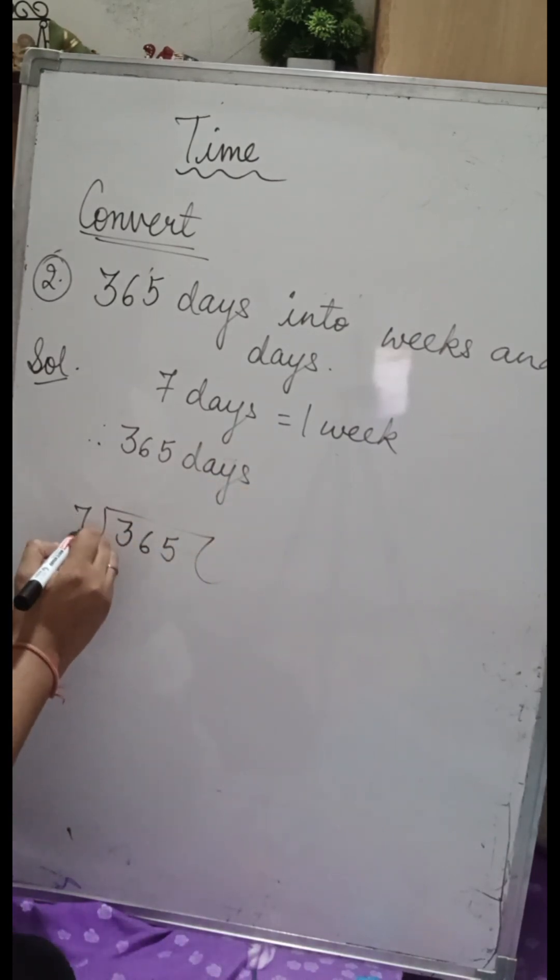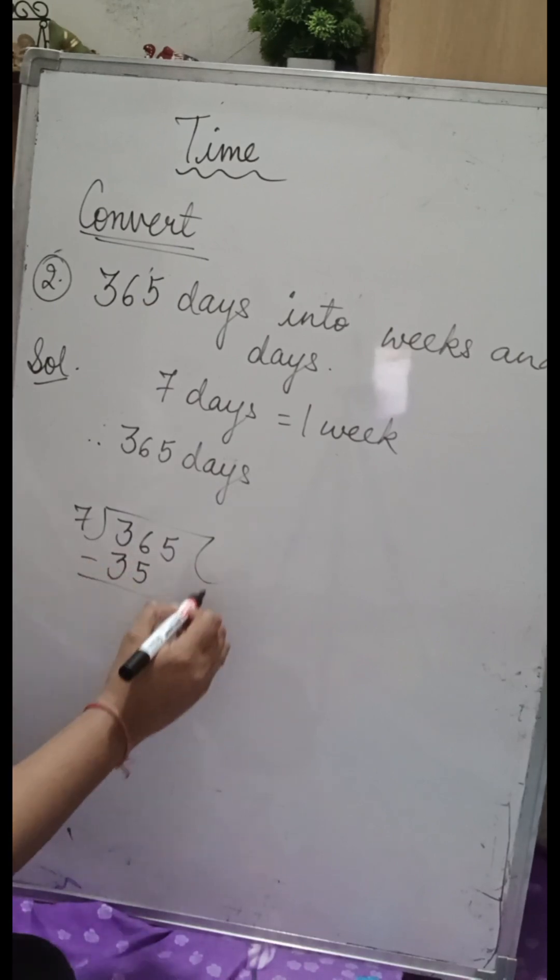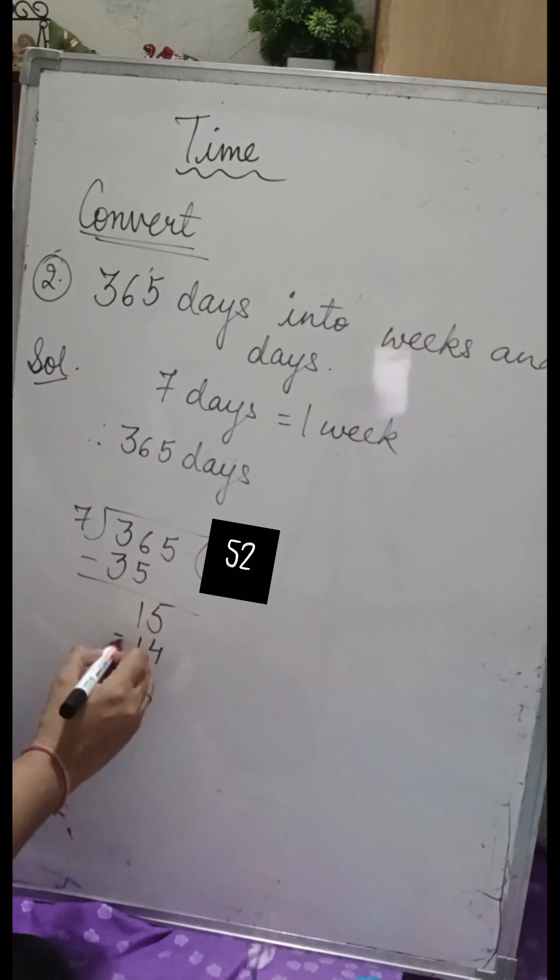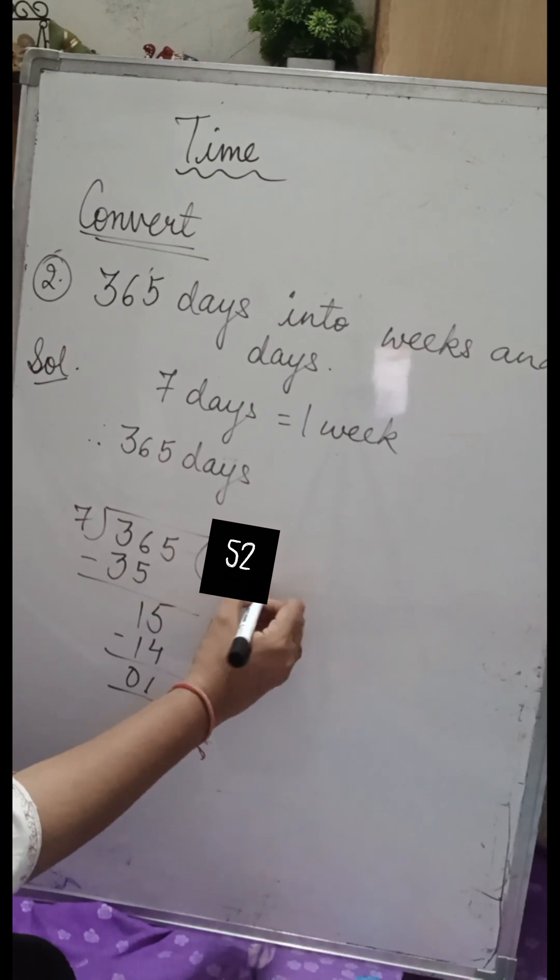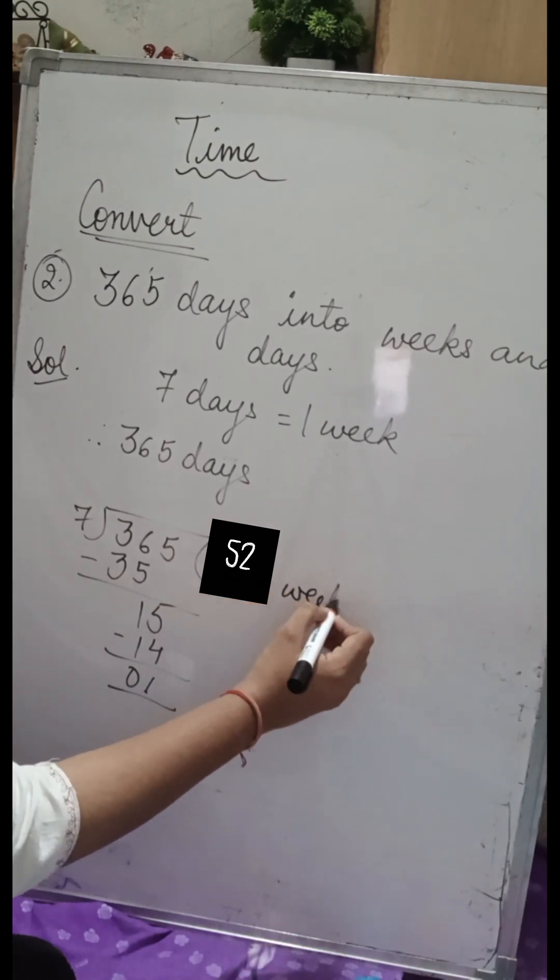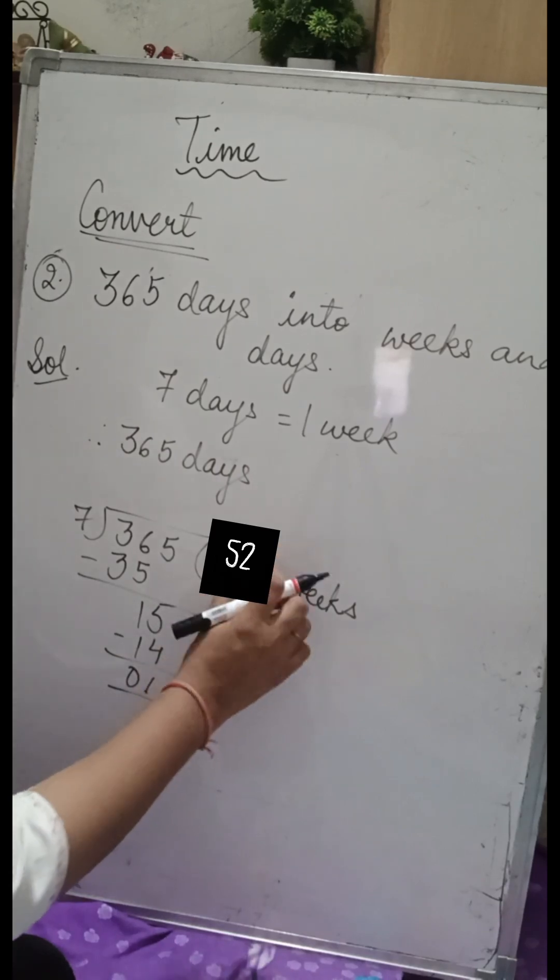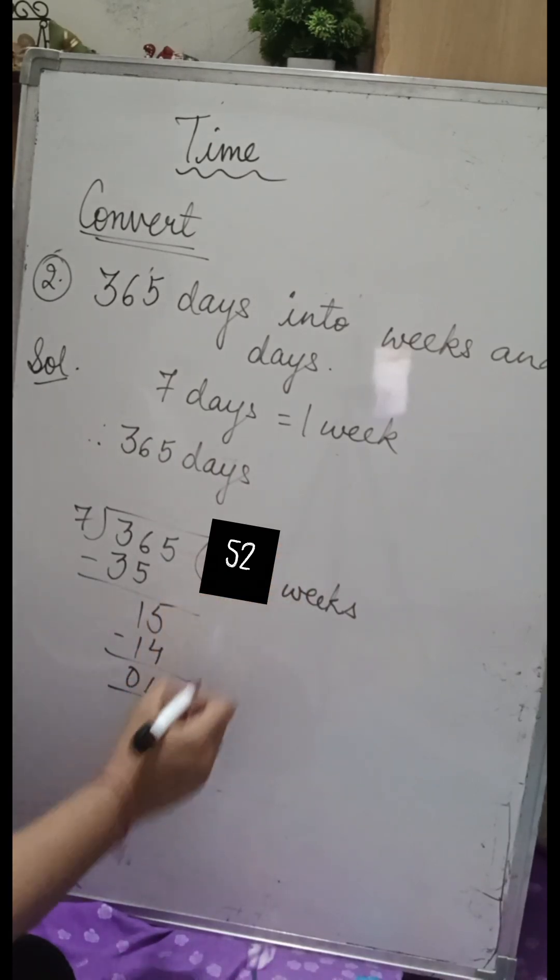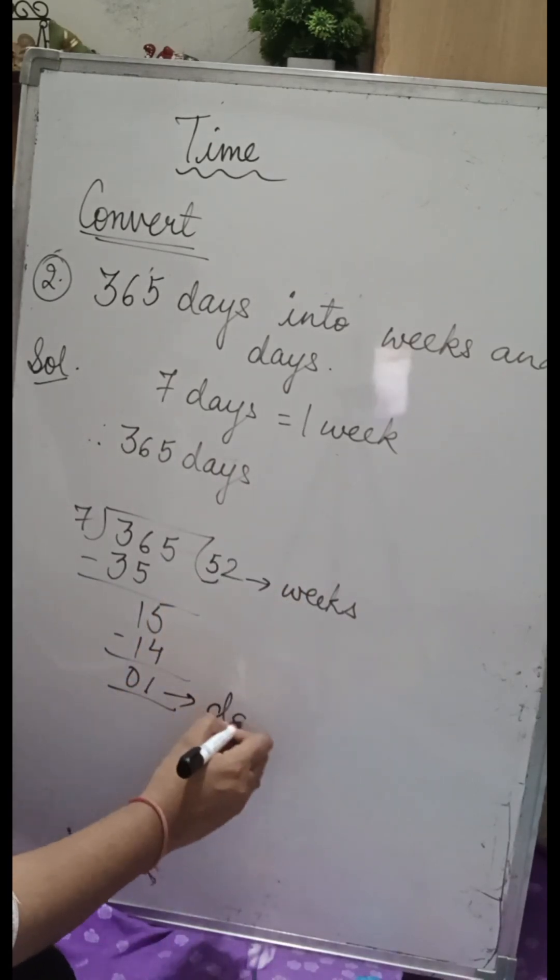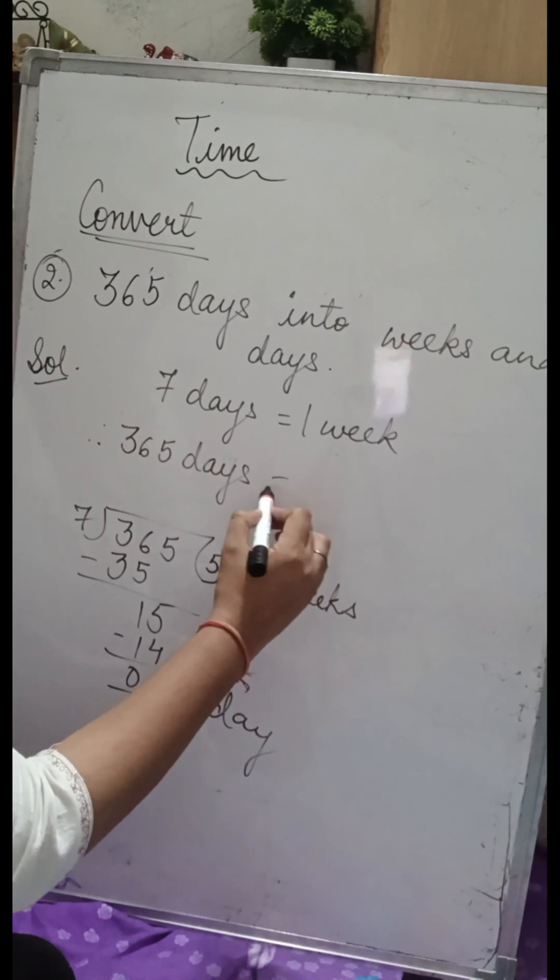Whatever we get as quotient will be the weeks, and the remainder will be the days. On dividing we get 52 as the quotient and one as the remainder, which means 365 days equals 52 weeks and one day.